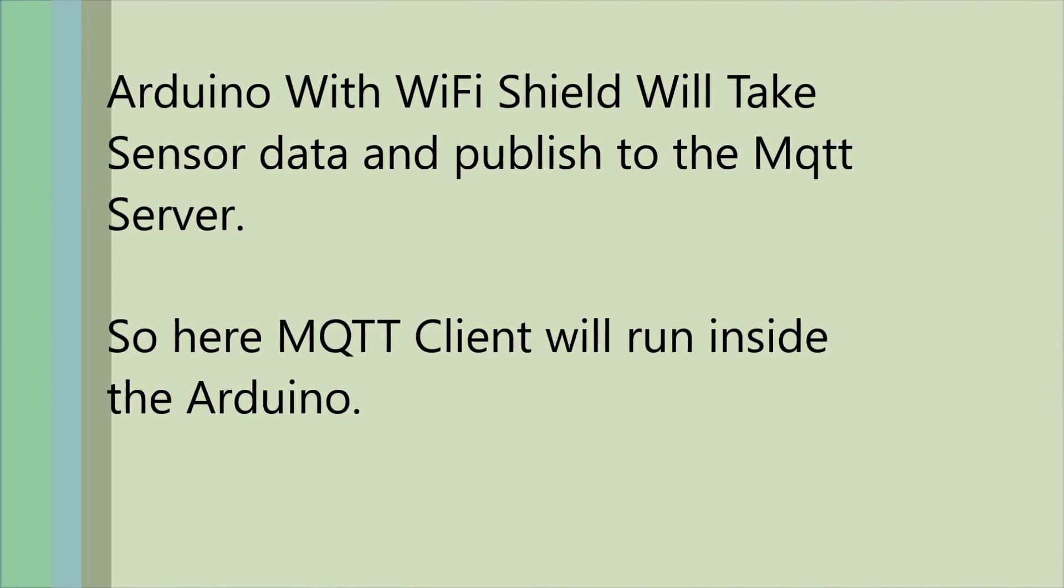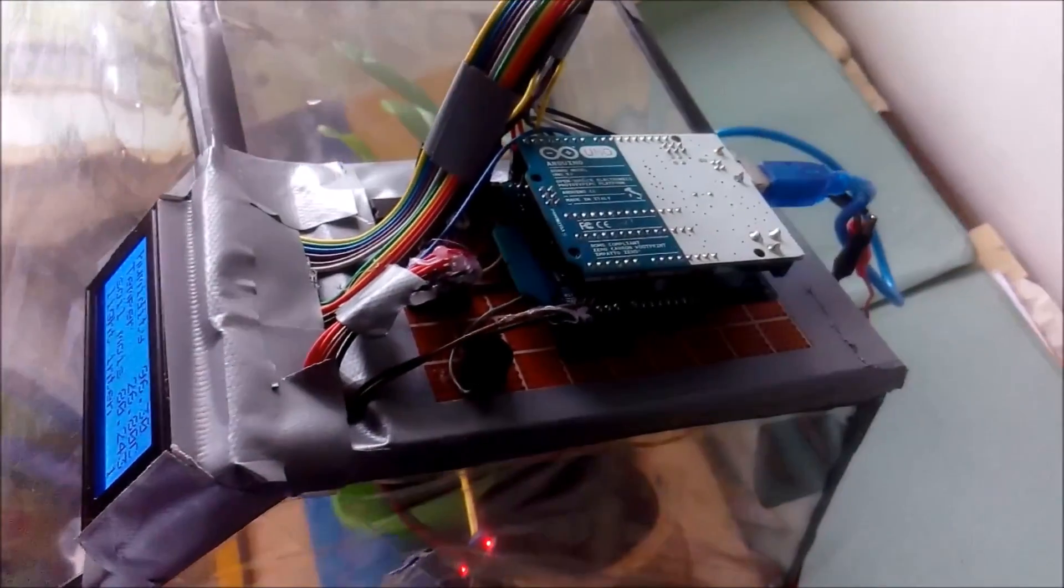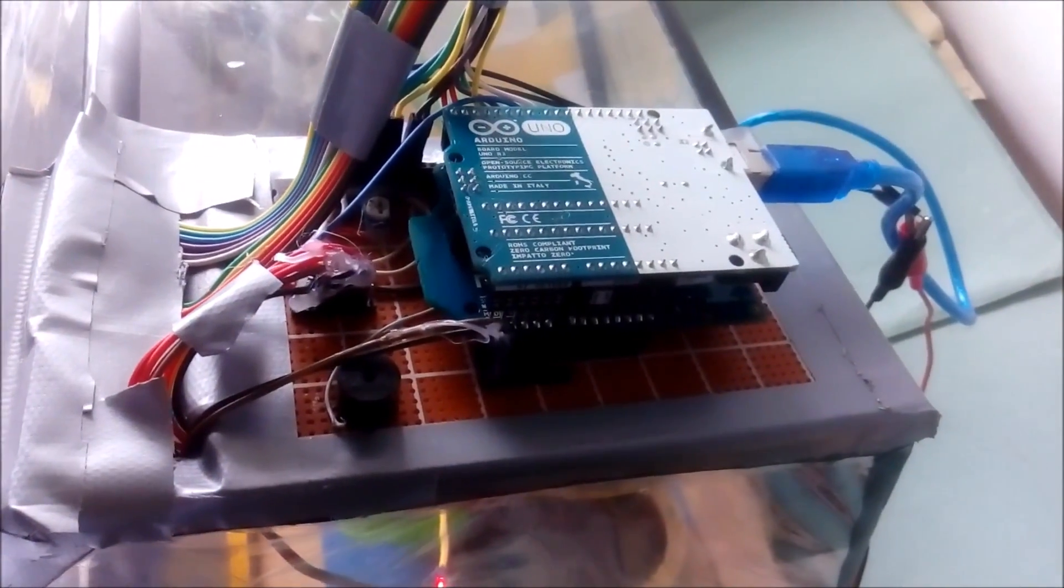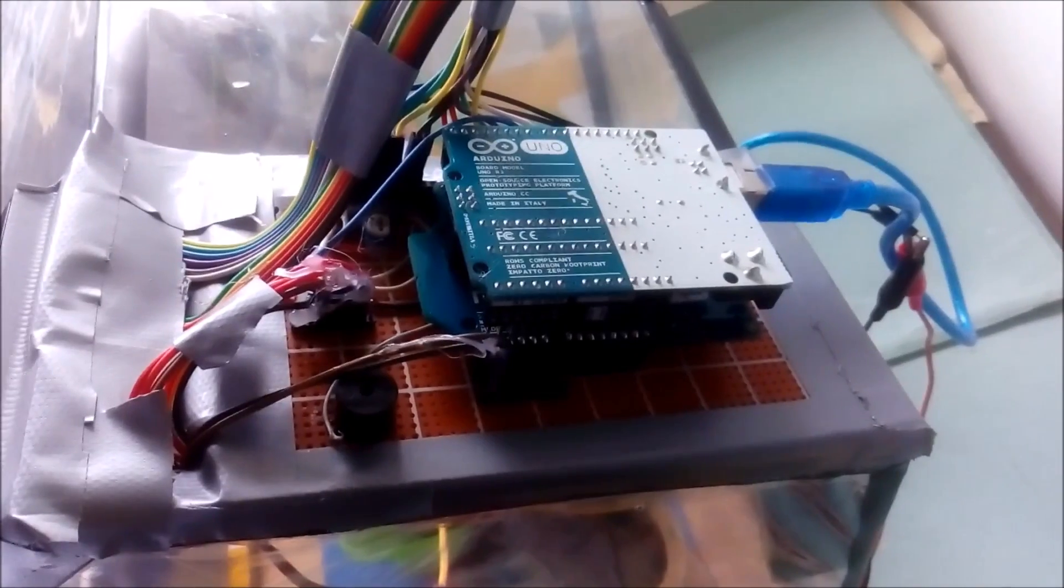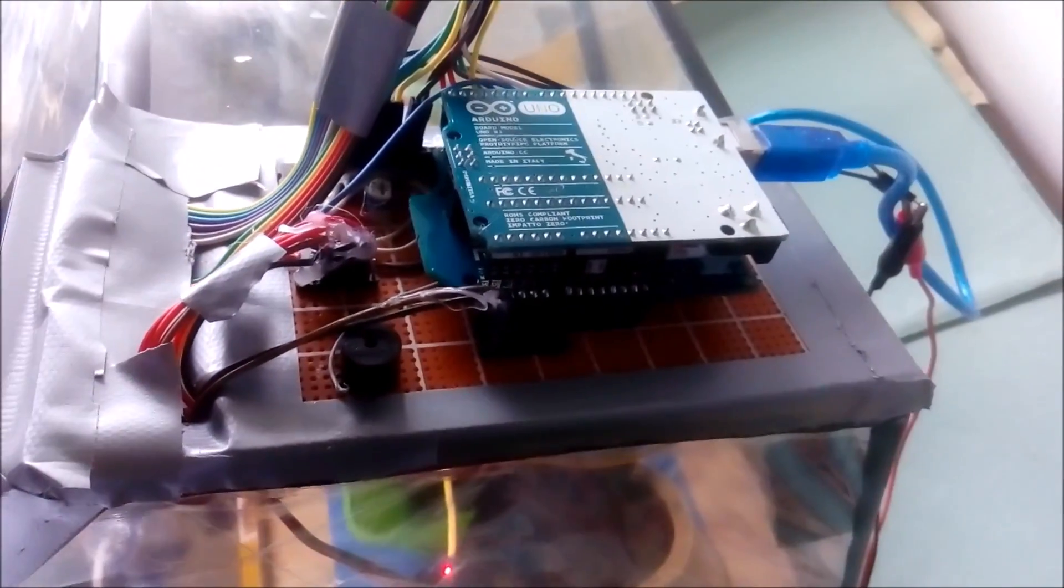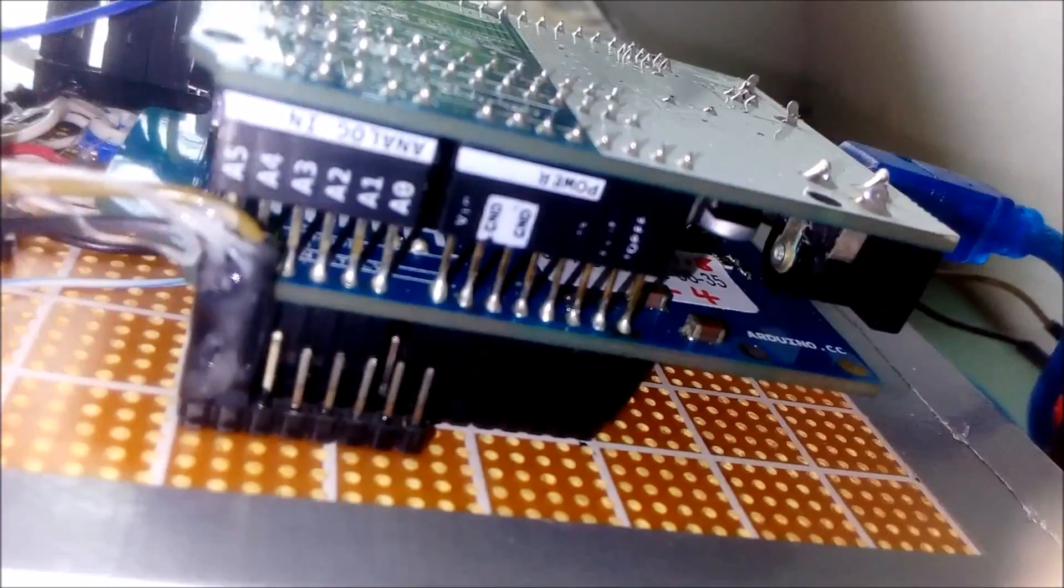This microcontroller will get data from the sensors and publish those data to the MQTT server which runs inside the Raspberry Pi. So here Arduino Uno is acting like an MQTT client.